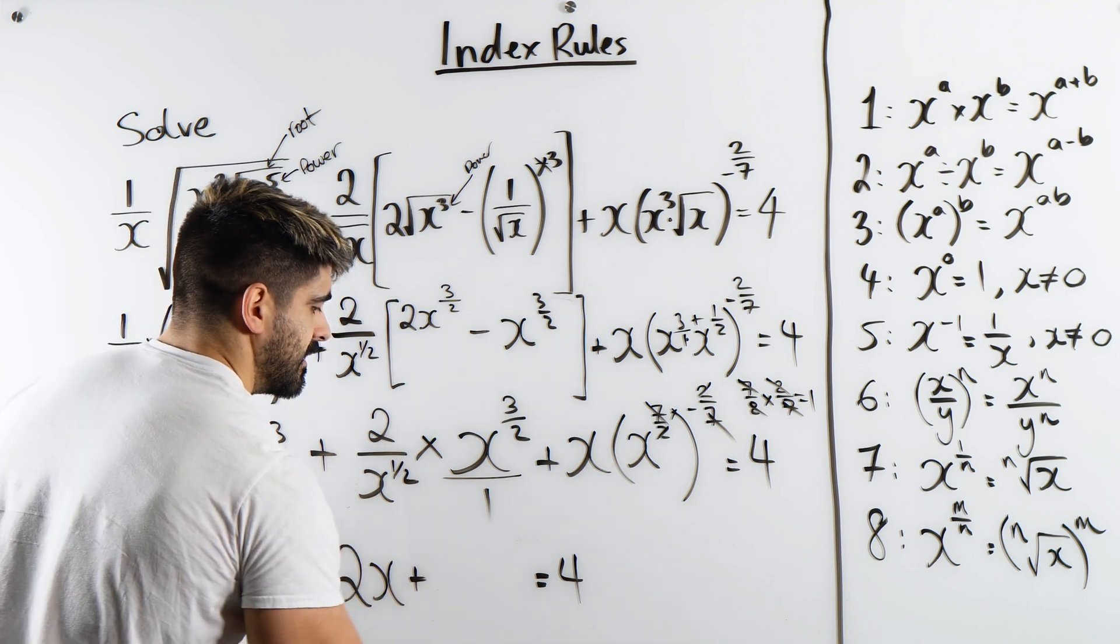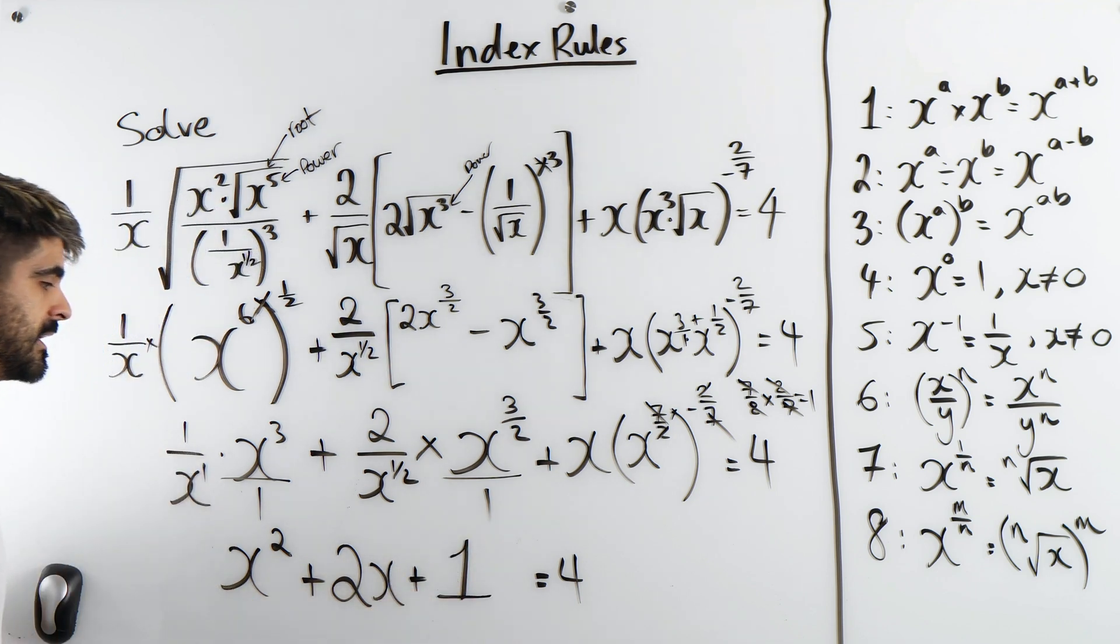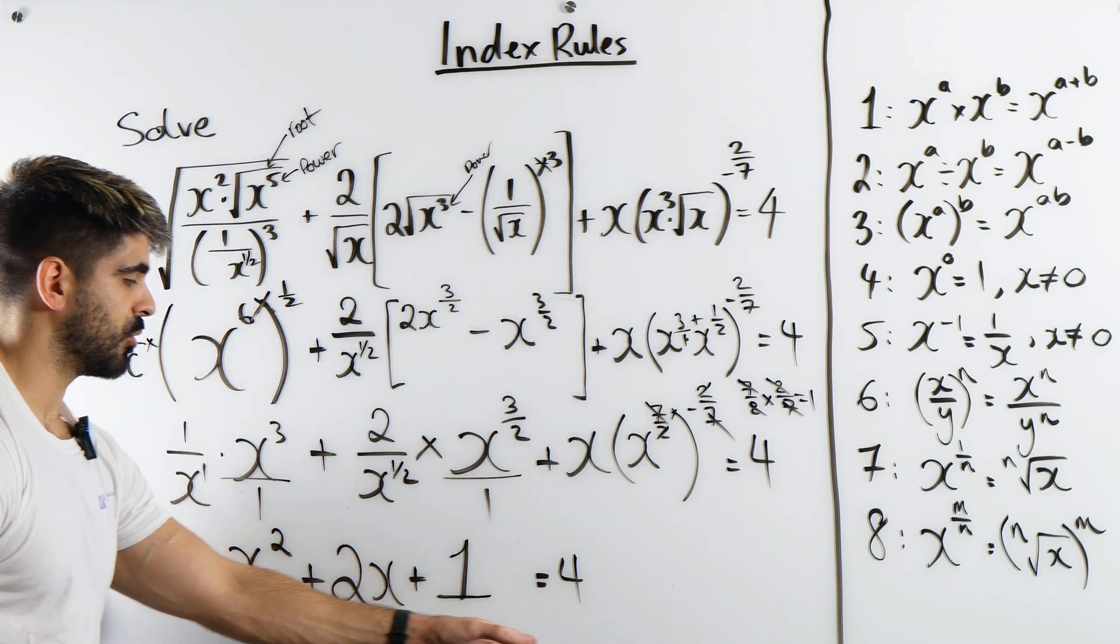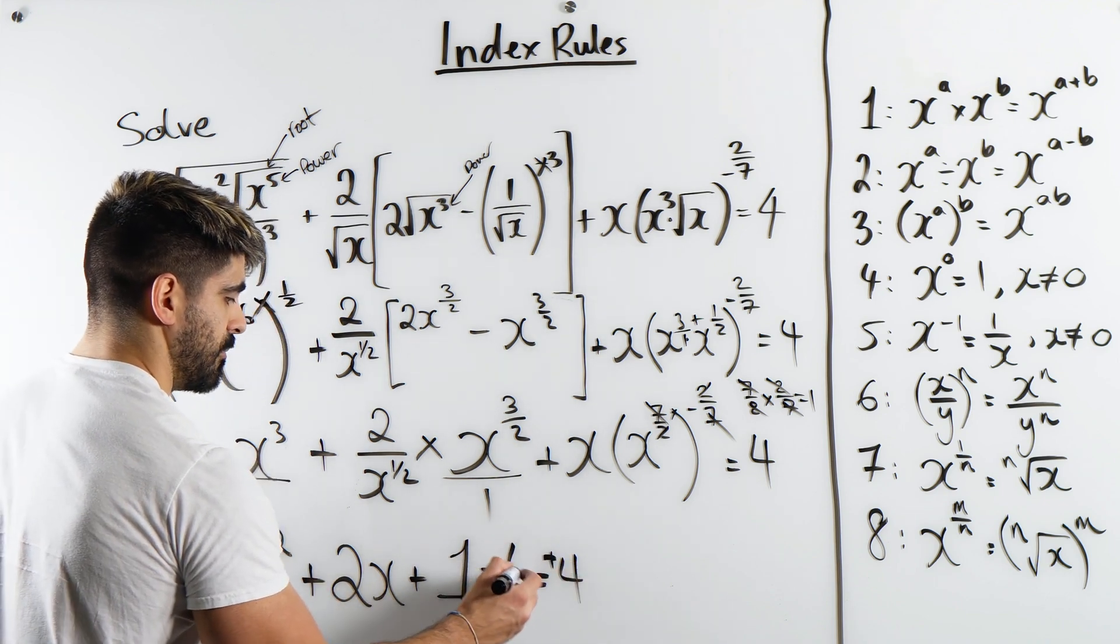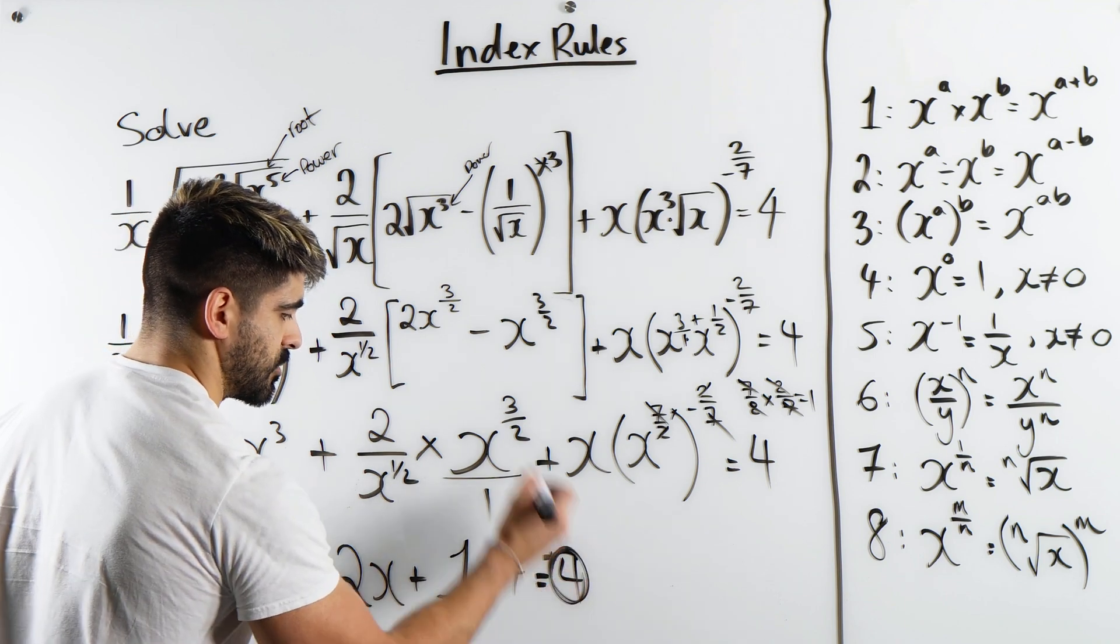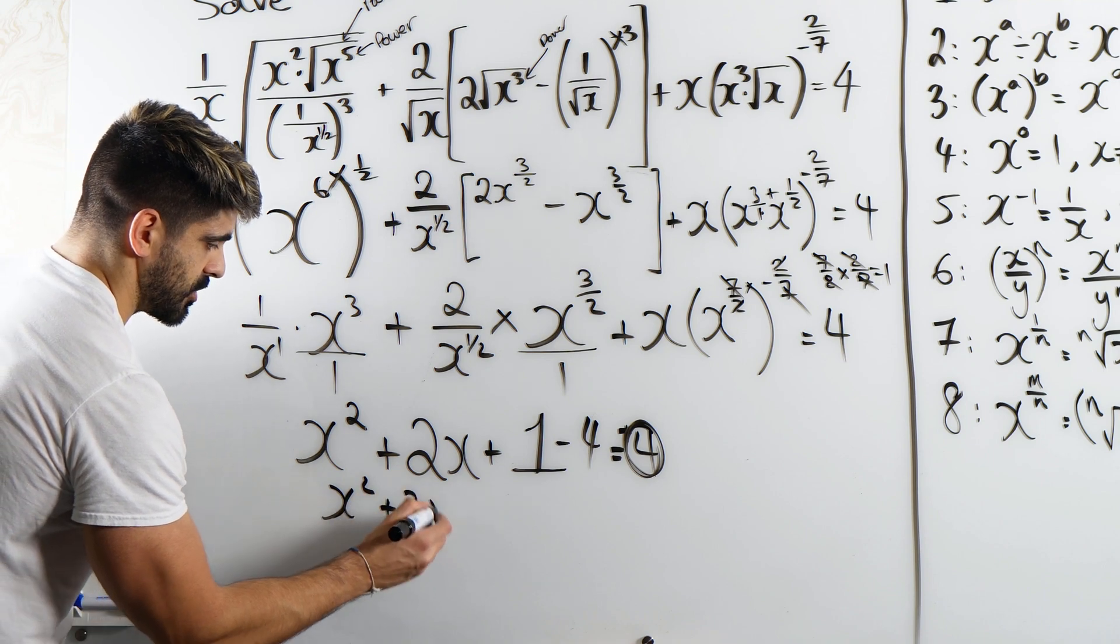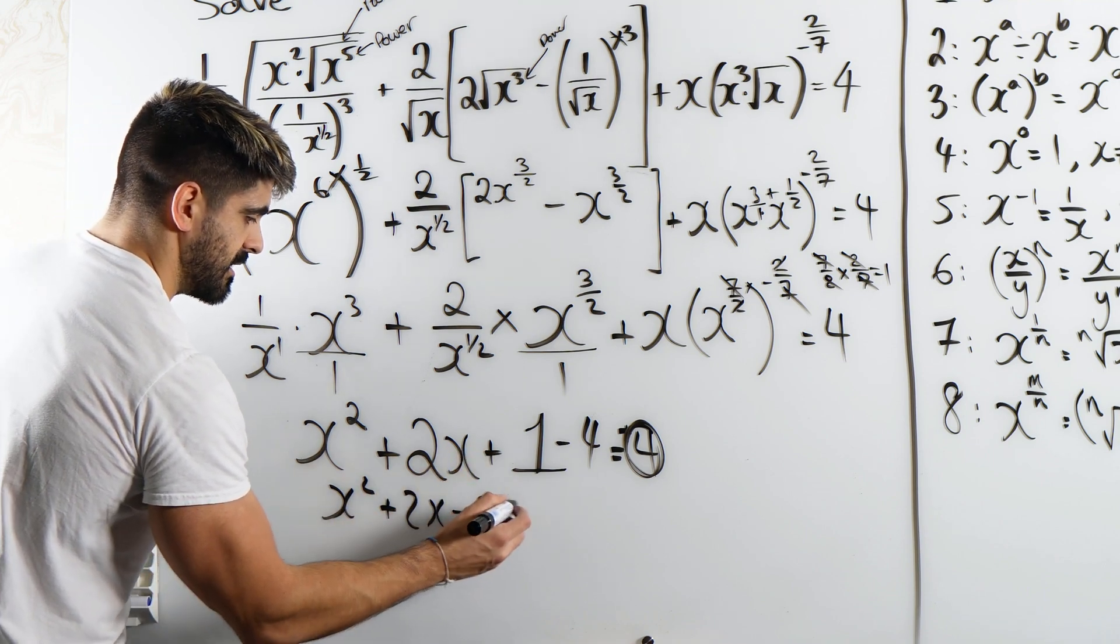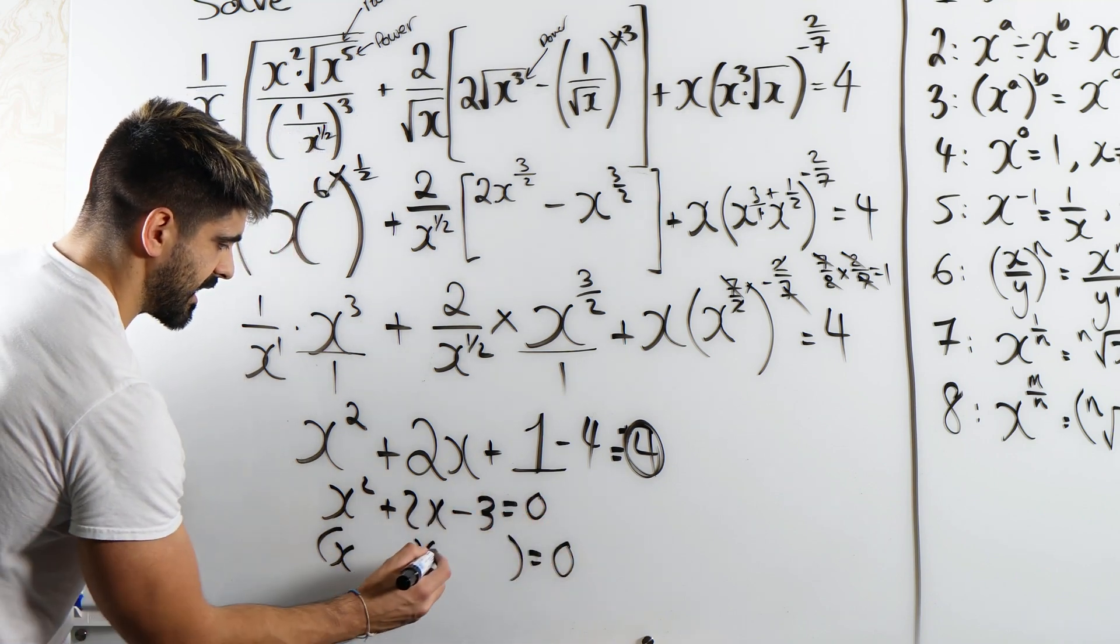This is leaving us with a very beautiful quadratic. So we're going to move all the numbers to one side. So a positive 4 on this side will become a minus 4 on this side. This will then be 0. So we're left with x squared plus 2x, 1 minus 4 is minus 3 equals 0.